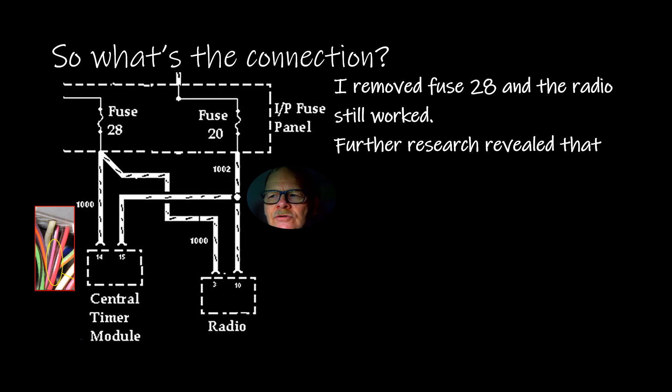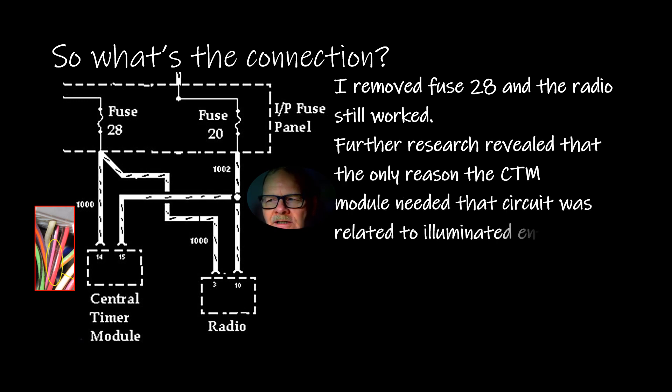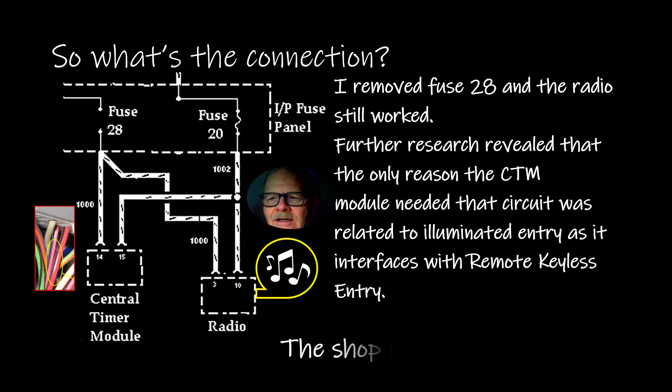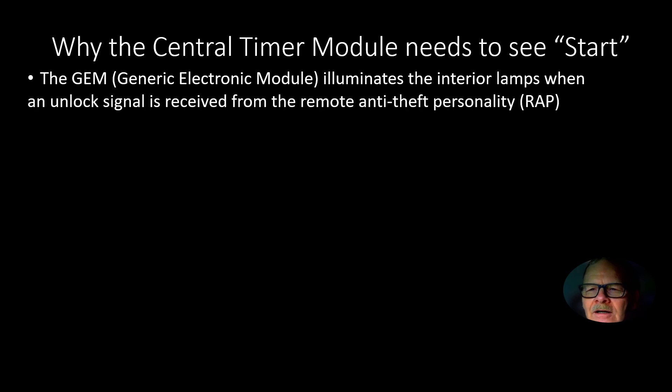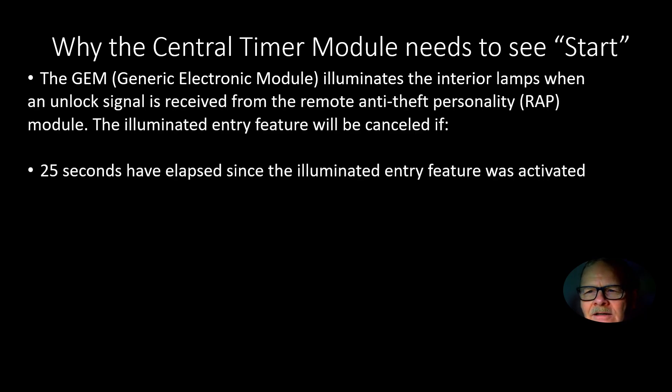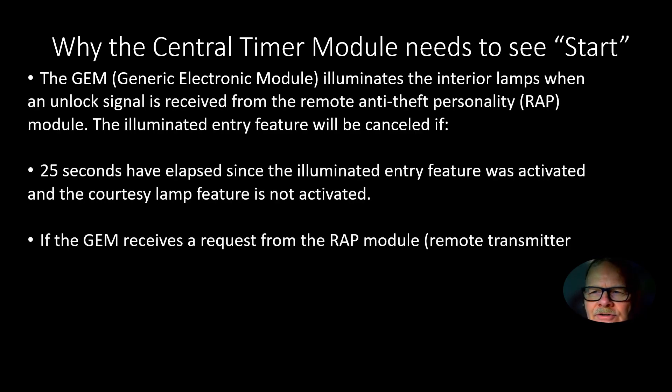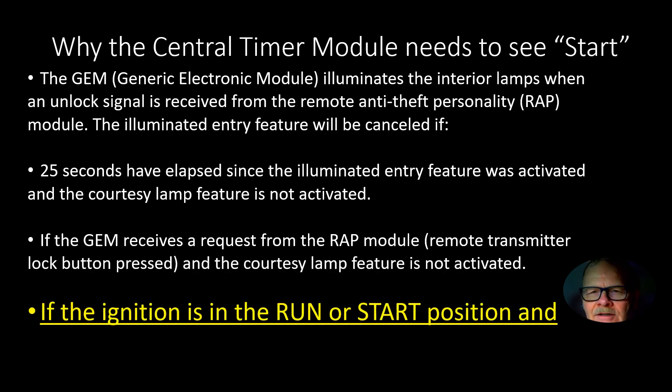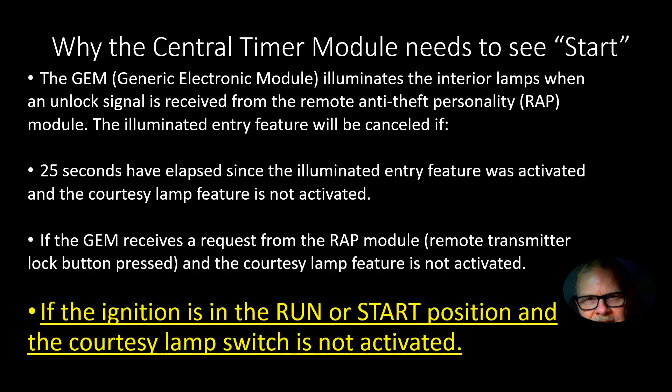I removed fuse 28 and the radio still worked. Research revealed that the only reason the CTM module needed that circuit was related to the illuminated entry as it interfaces with the remote keyless entry. The shop manual reads: generic electronic module illuminates the interior lamps when an unlock signal is received from the remote anti-theft personality module. In other words, when you hit your fob it turns the inside lights on.